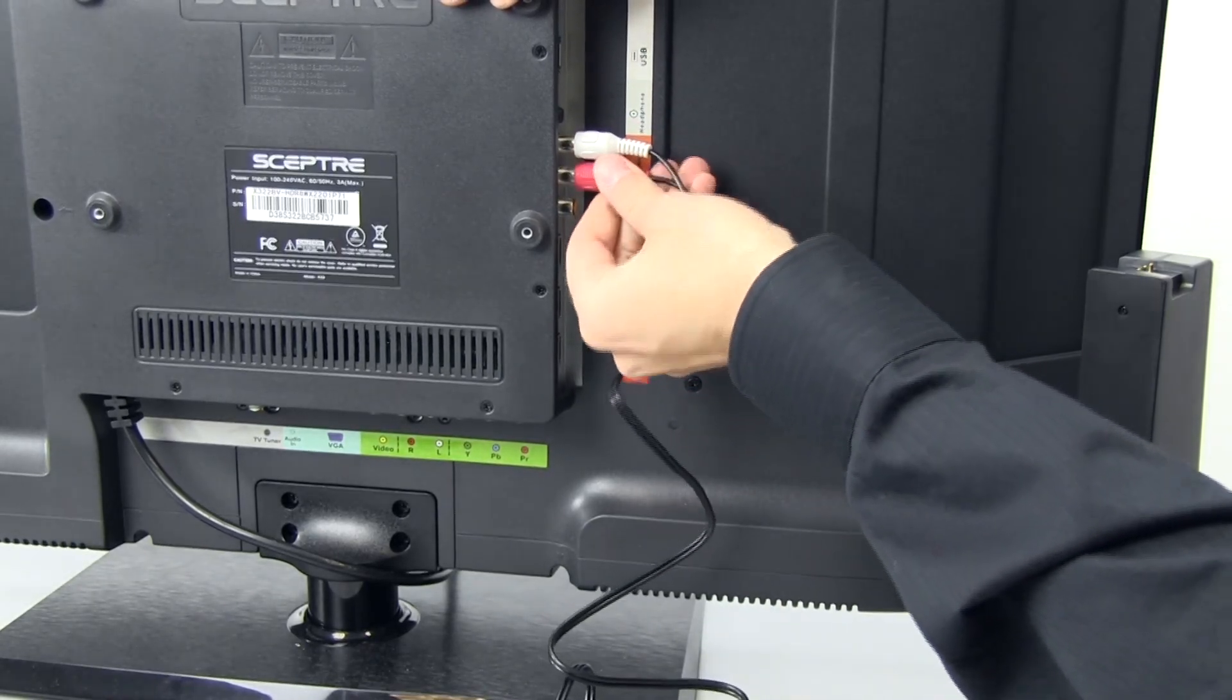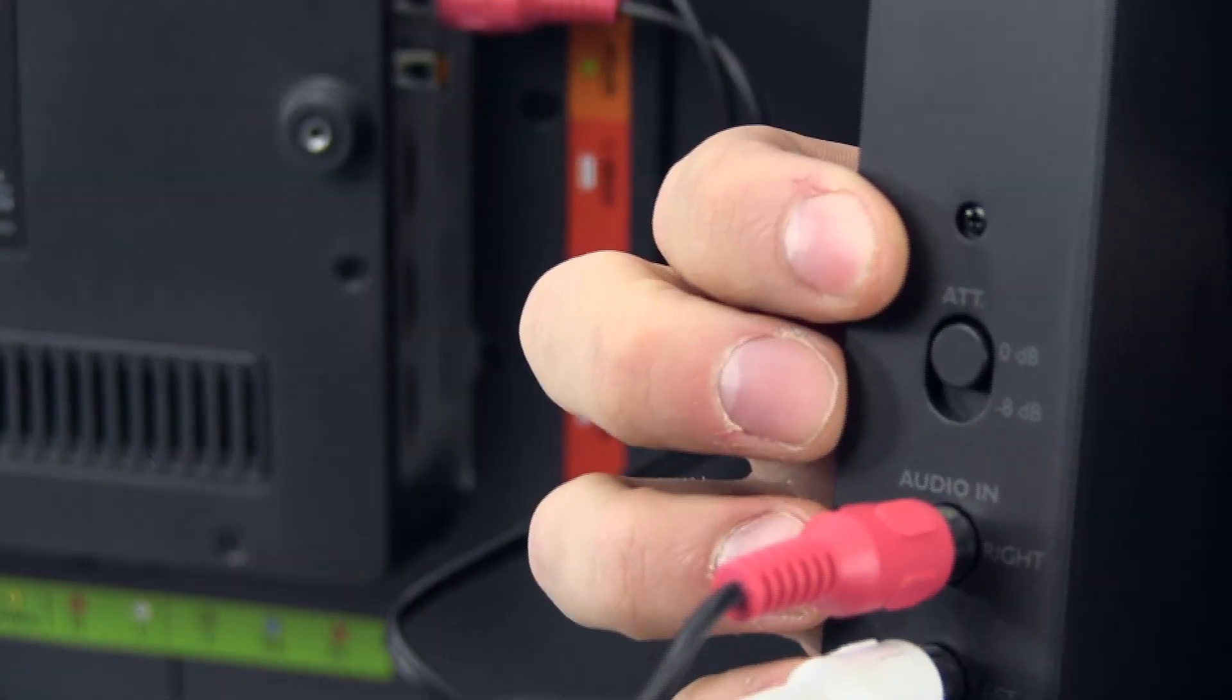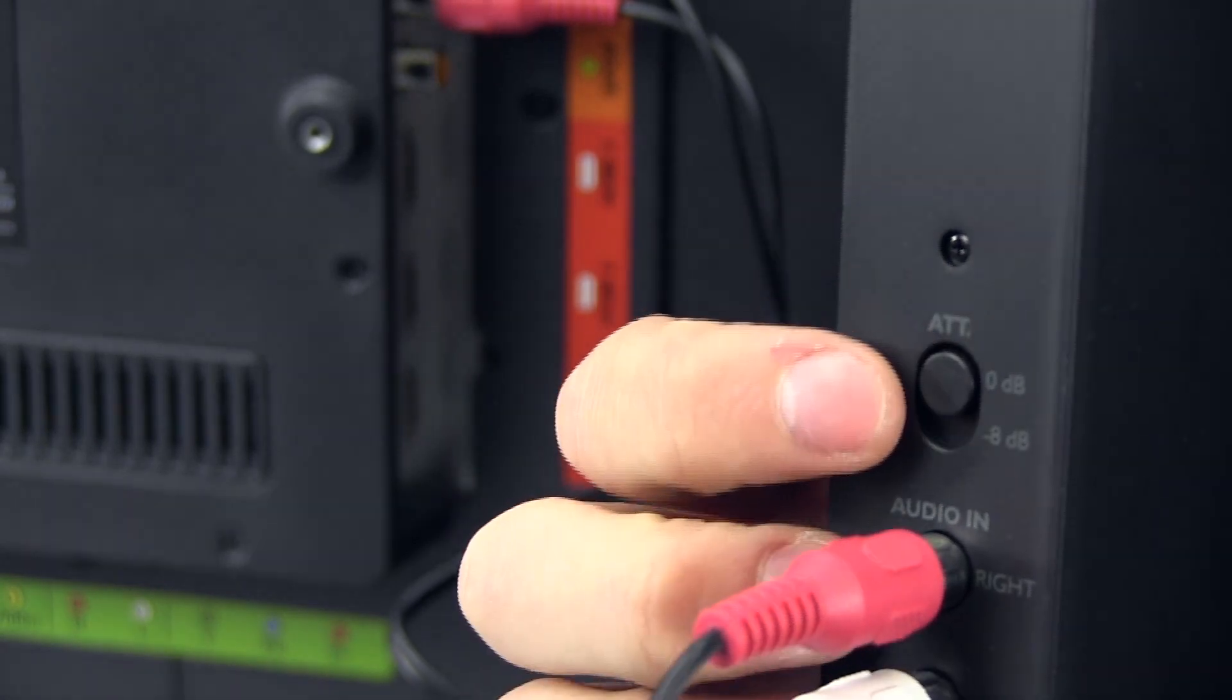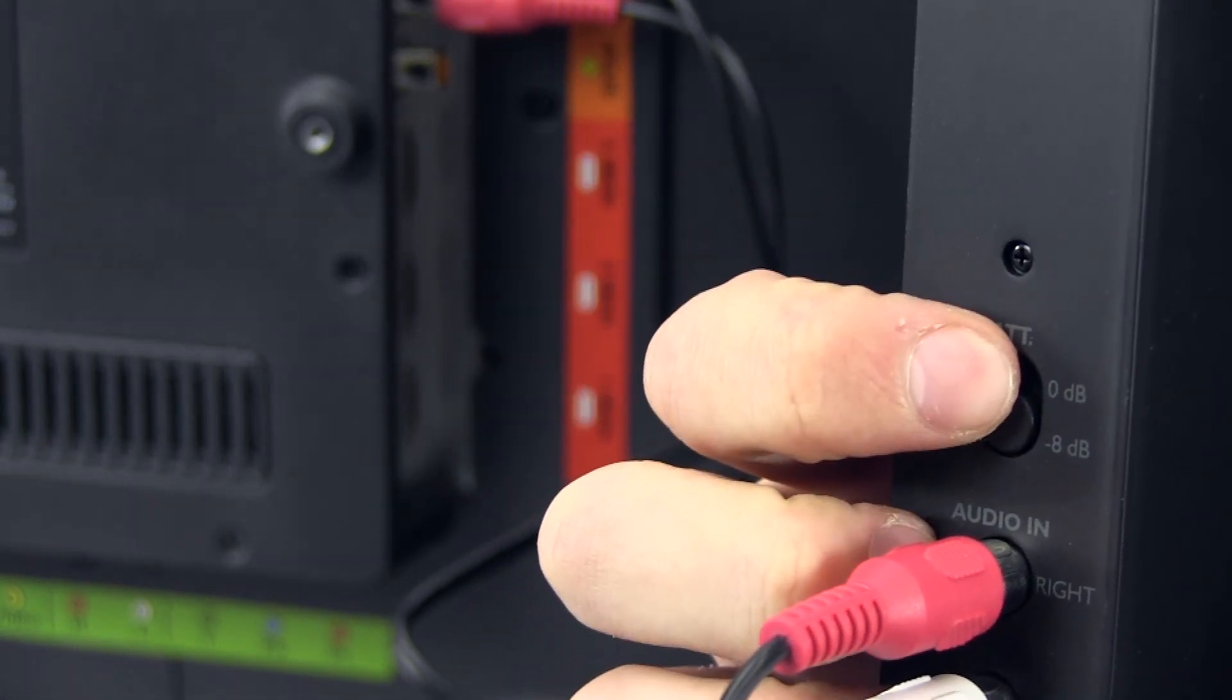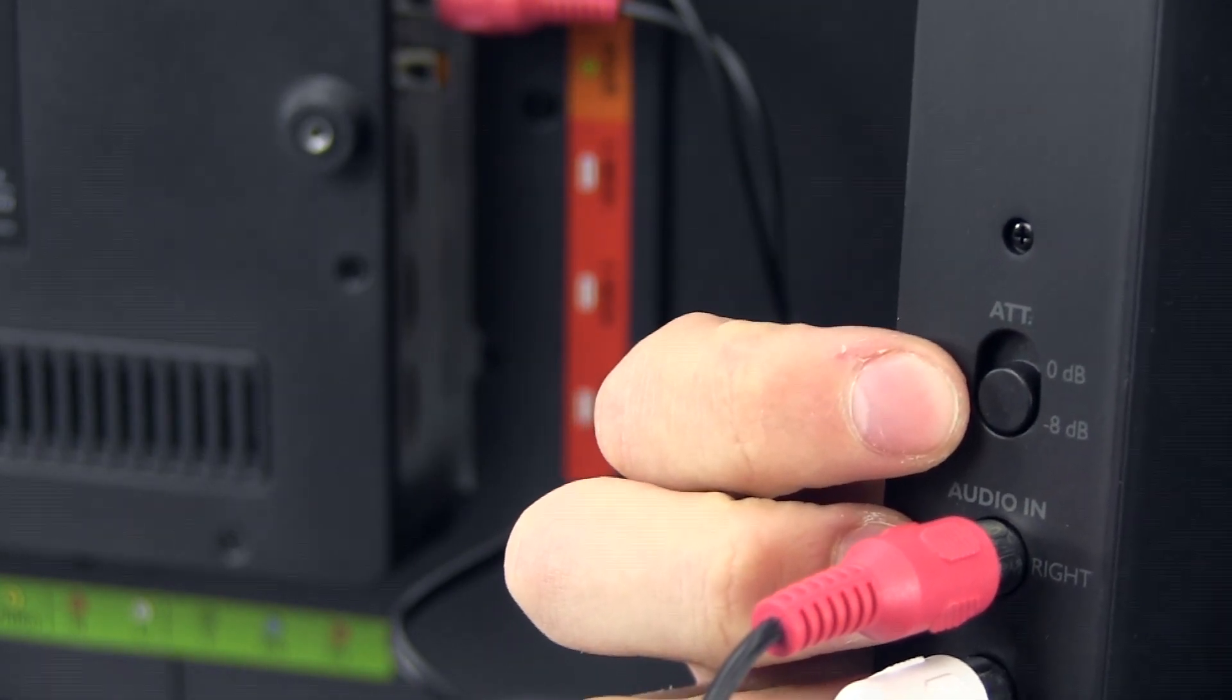These typically match up in color to the RCA cables. When connecting to a TV, DVD, VCD, VCR, or hi-fi device, set the attenuation to negative 8 dB for the recommended signal strength.